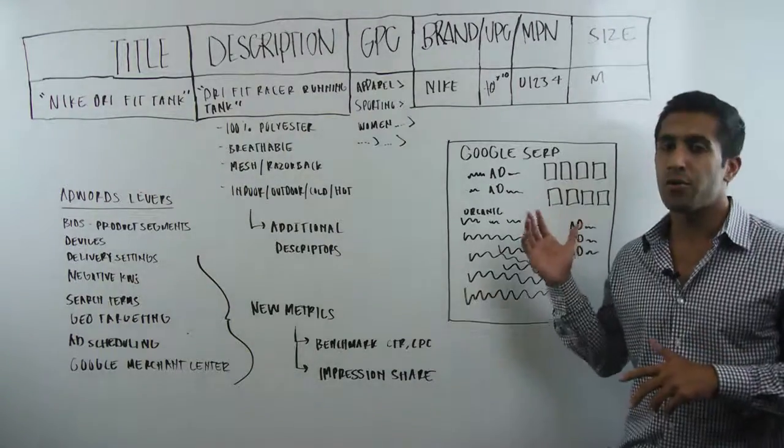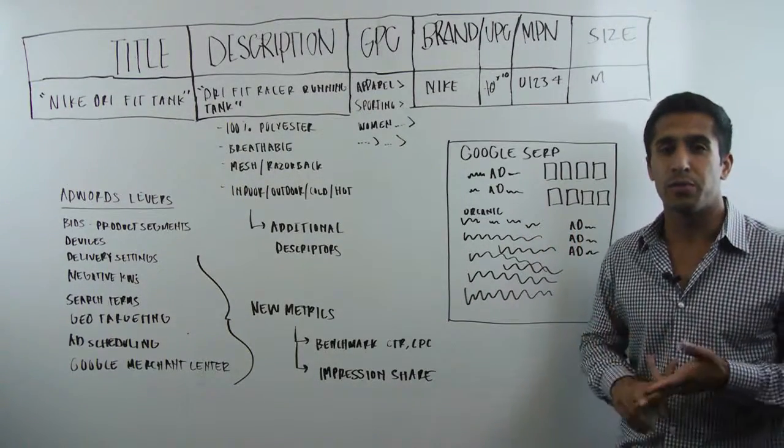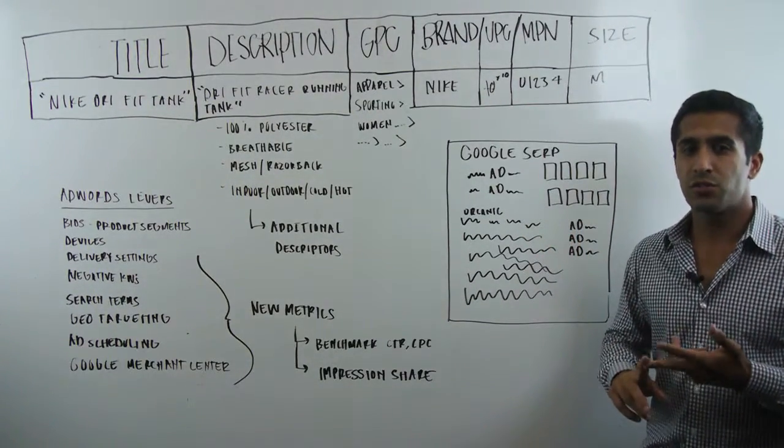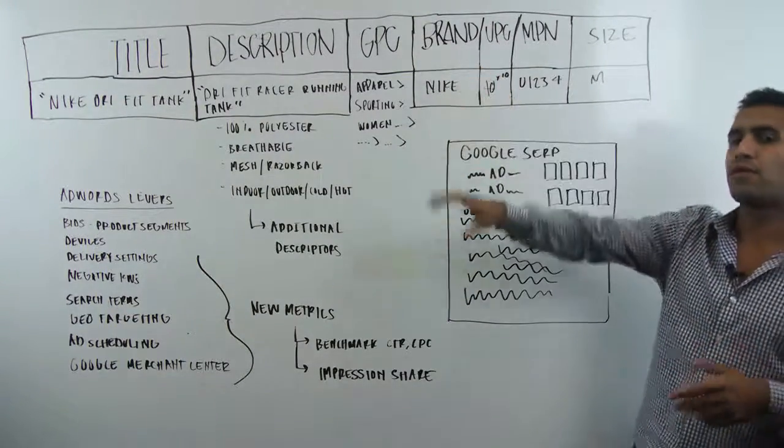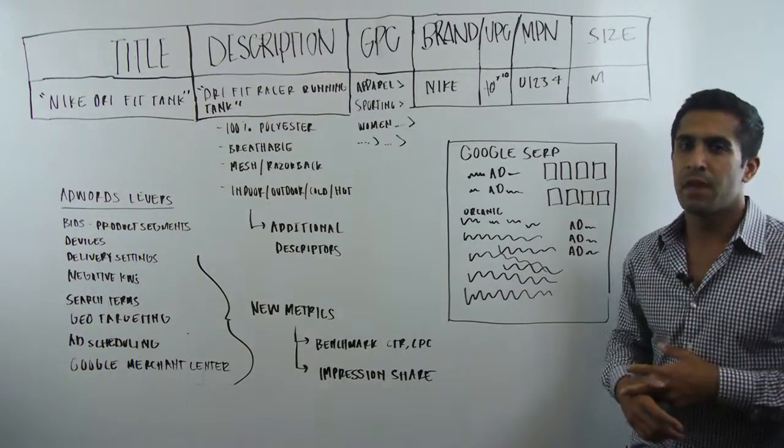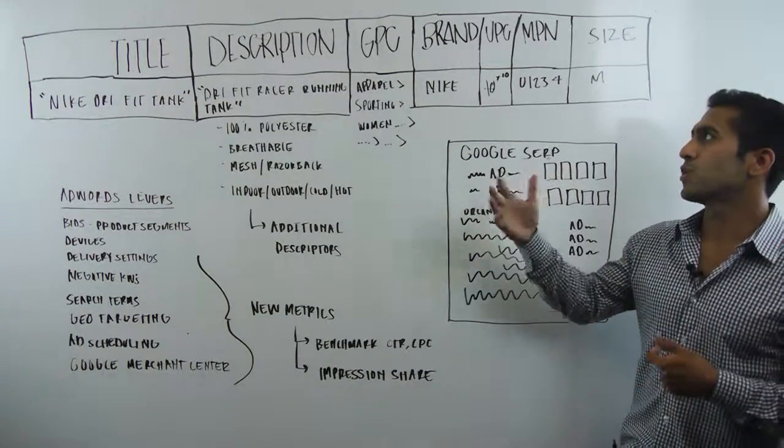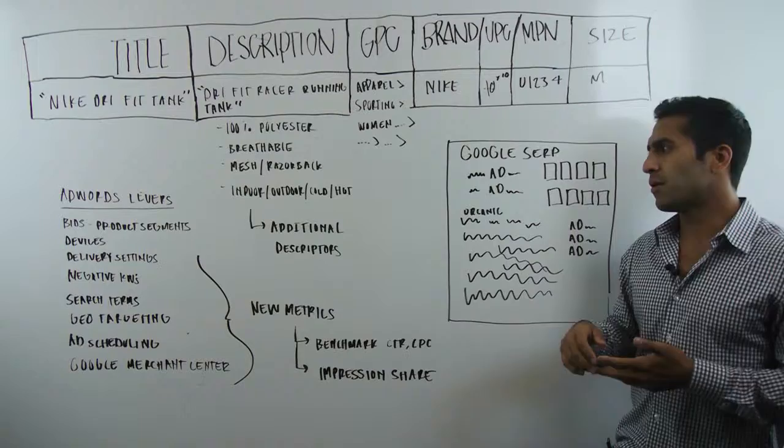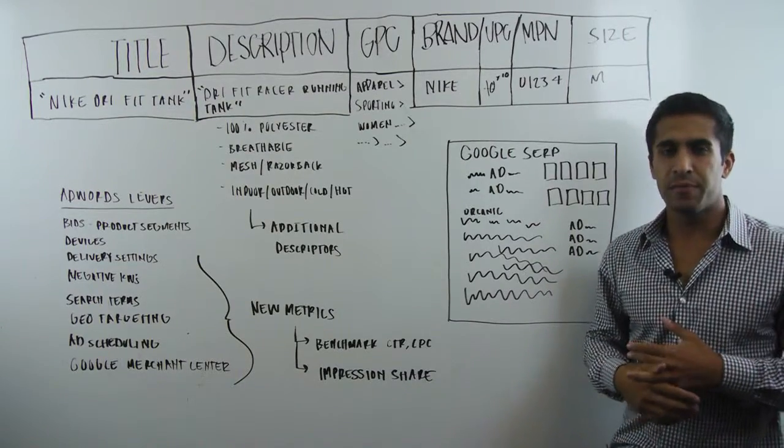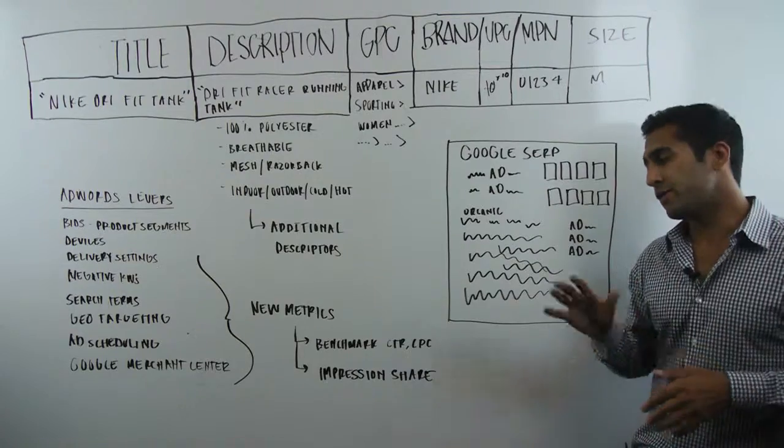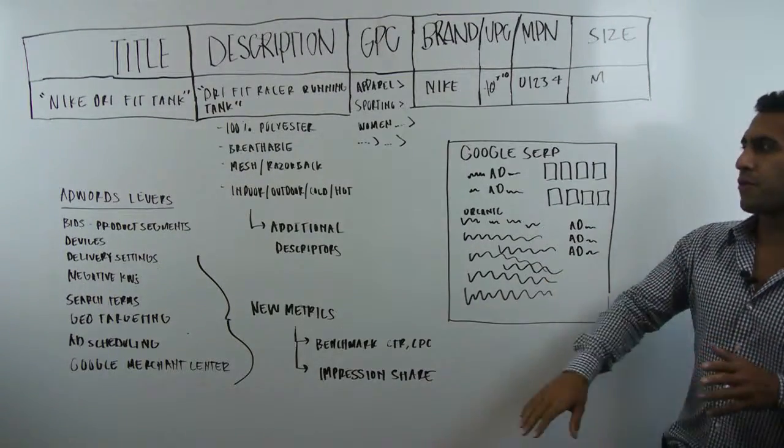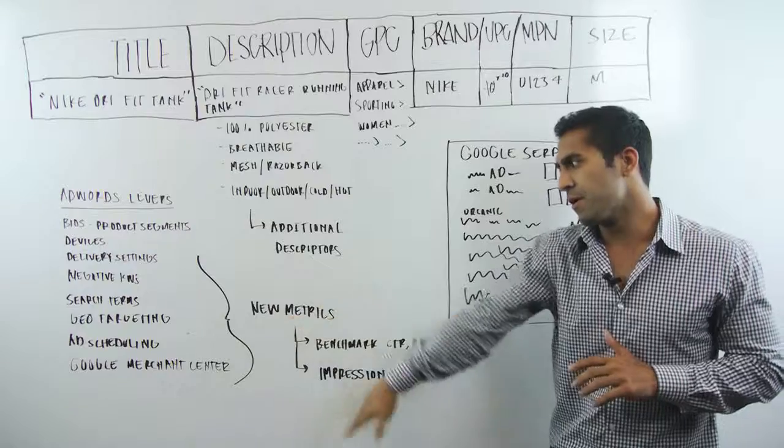Interestingly enough, this program is powered by two critical components. First, we've got the product data feed. This is going to be the sampling of all the products in your feed, all the products that you sell online. Everything from your titles, descriptions, brands, all the modifiers that you'd want to include in there. The other set of tools that's really deciding what enters this actual auction are going to be your AdWords levers. And there's a number of them there.